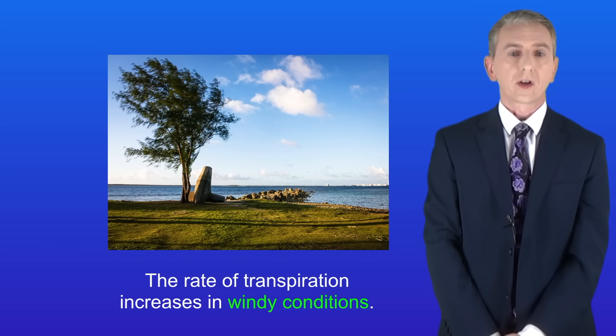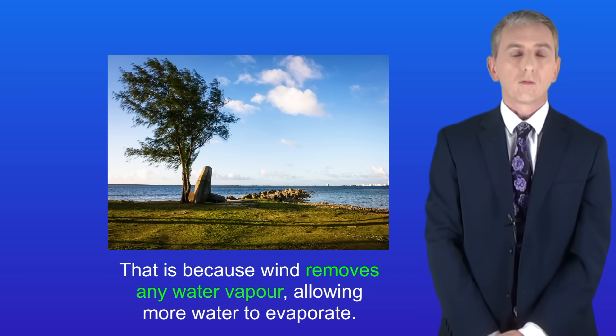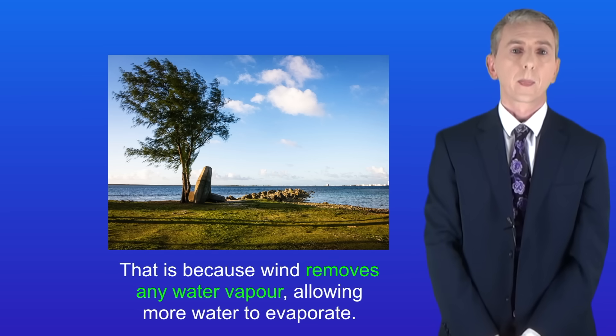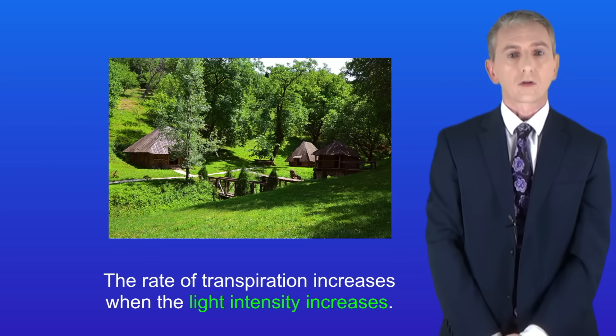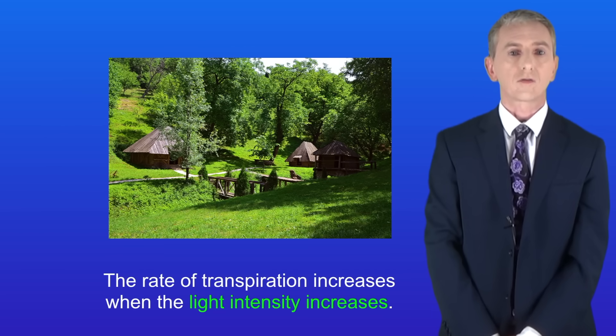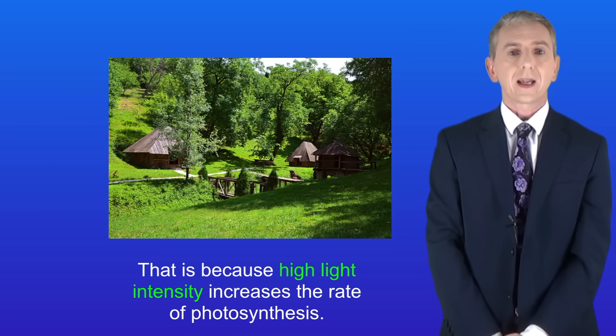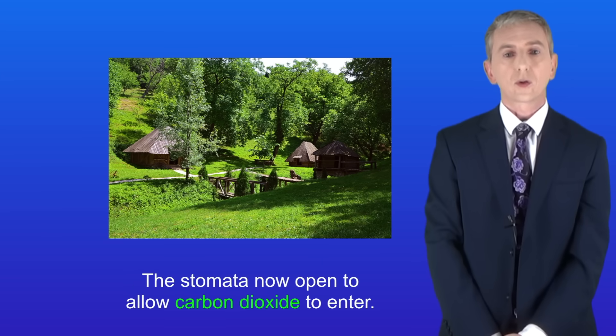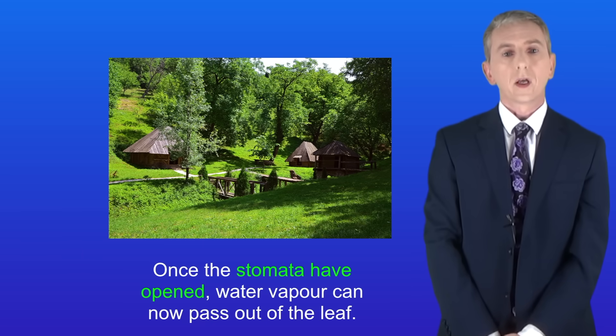The rate of transpiration increases in windy conditions because wind removes any water vapor allowing more water to evaporate. And finally, the rate of transpiration increases when the light intensity increases. That's because high light intensity increases the rate of photosynthesis. The stomata now open to allow carbon dioxide to enter. Once the stomata have opened, water vapor can now pass out of the leaf.